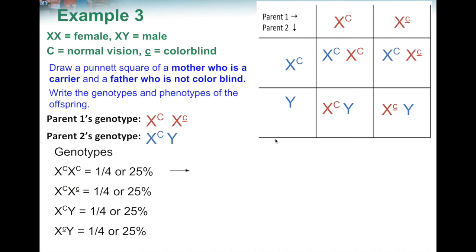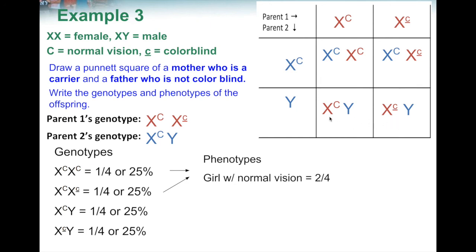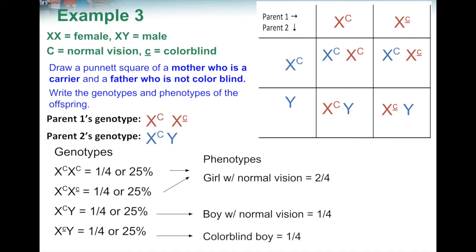Each box in this Punnett square has a different genotype, so each is 1 out of 4. For phenotypes: the two girl boxes (X capital-C, X capital-C and X capital-C, X lowercase-c) both show girls with normal vision because each has at least one capital C — that's 2 out of 4 or 50%. One boy box (X capital-C, Y) is a normal vision boy — 1 out of 4 or 25%. The other boy box (X lowercase-c, Y) is a colorblind boy — 1 out of 4 or 25%. So girls in this cross always have normal vision, while boys have a 50/50 chance of normal vision or being colorblind.